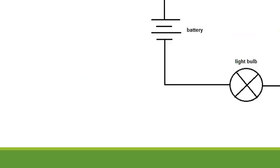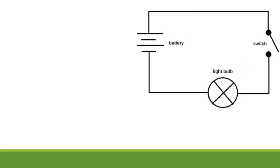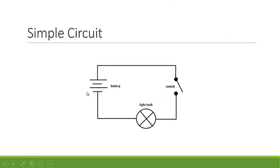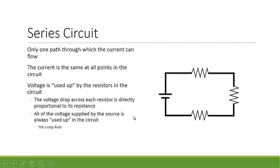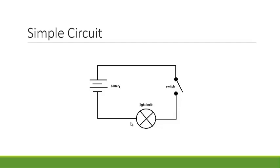This is an example of a simple circuit. In a simple circuit you would have a voltage source — in this case there are two batteries — and some kind of resistor, or load. We call a simple circuit any circuit that has a voltage source and only one resistor attached to it.